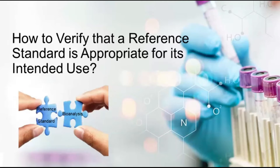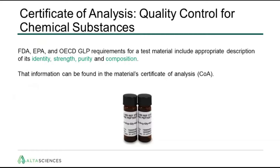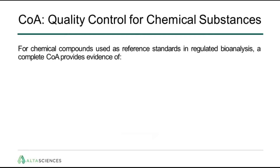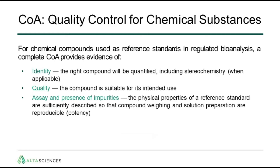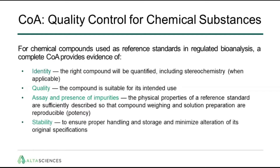How do we verify that a reference standard is appropriate for its intended use? FDA, EPA, and OECD GLP requirements for a test material include appropriate description of its identity, strength, purity, and composition. That information can all be found in the material certificate of analysis or COA. For chemical compounds used as reference standards in regulated bioanalysis, a complete certificate of analysis provides evidence of identity so that the right compound will be quantified, including stereochemistry if applicable. The quality ensures the compound is suitable for its intended use. The assay and presence of impurity should be reported so that the physical properties are sufficiently described and compound weighing and solution preparation are reproducible. This is all linked to potency, which will be discussed later. And finally, stability ensures proper handling and storage of the standard and minimizes alteration of its original specifications.